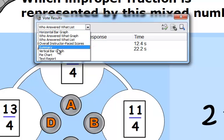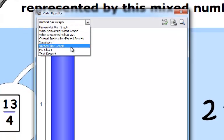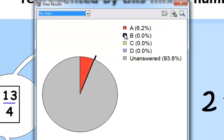I can choose the vertical bar graph, if I want to look at it a little bit different. I can also see a pie chart result as well, and this one will indicate with a dark highlight what is the correct answer choice.